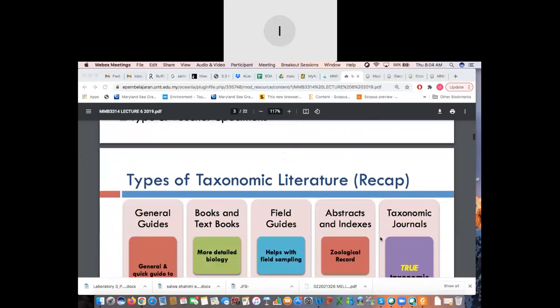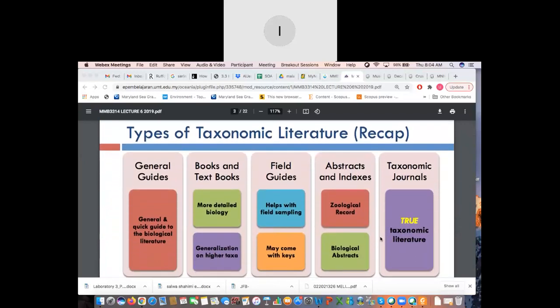Coming to types of taxonomic literature. So, again, this is a recap for last week's work. The different kinds of literature that we discussed last week is this one that is general guides, like a quick guide to, say, birds of Southeast Asia. Sometimes it can be pictorial, sometimes not. It really depends on how detailed it is. This is a very general guidebook.